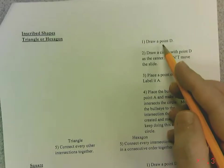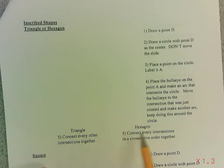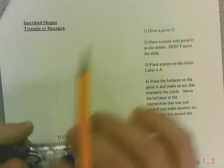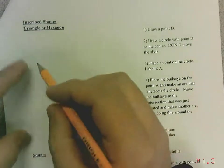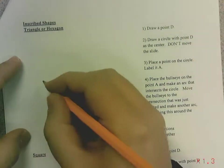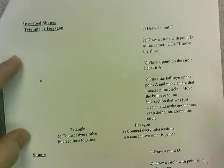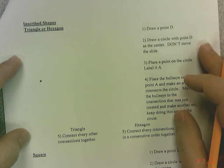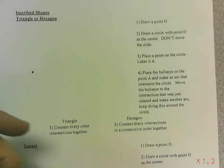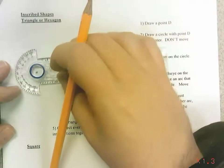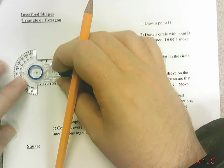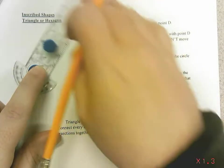To start off, it wants me to draw a point D. There are two different shapes that I want to inscribe into the circles, so I'm actually going to draw two circles here. I'm going to try to make them not too big. So, point D — just draw a point somewhere. Then it wants me to draw a circle with that as the center, so I place the bullseye on that intersection.